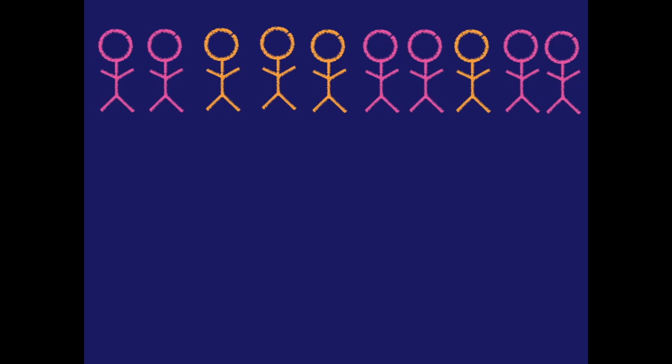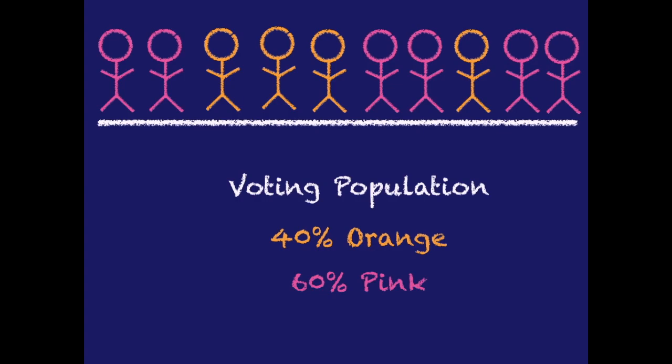We start our discussion of opinion polling by discussing our voting population. Our voting population is a set of individuals who vote in our electorate. This particular voting population, as an example, votes 40% orange and 60% pink. The basic problem in opinion polling is that we can't exhaustively ask every single individual in this voting population to tell us what their vote is before election day, so we have to rely on a sample.